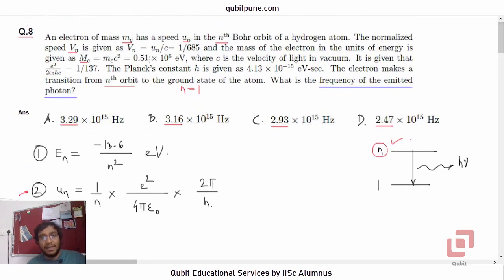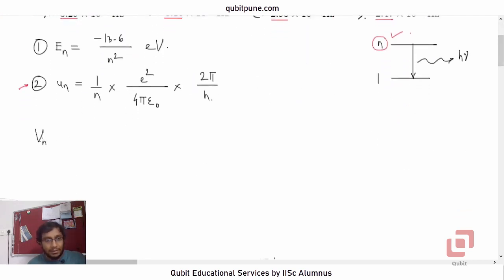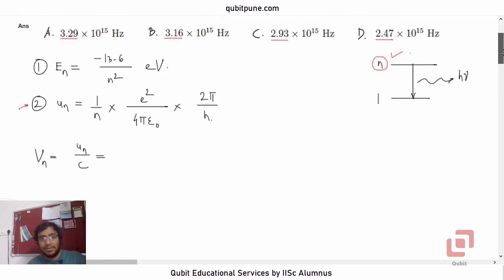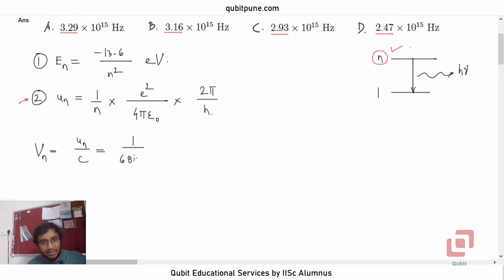So our first objective is to determine n, and the second formula is going to help us in finding the value of n. What they have given us is Vn, which is Un upon c, and they have given us this value, 1 upon 685. Now in this formula, when we simplify, we get 1 upon n into e squared upon 2 epsilon naught hc.